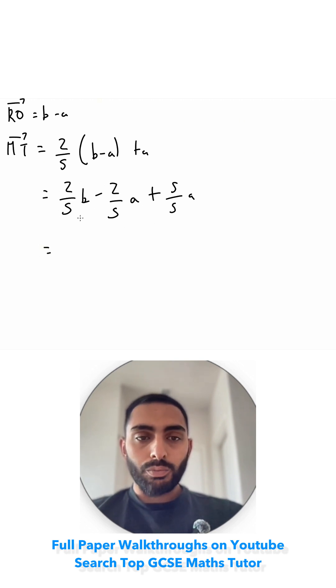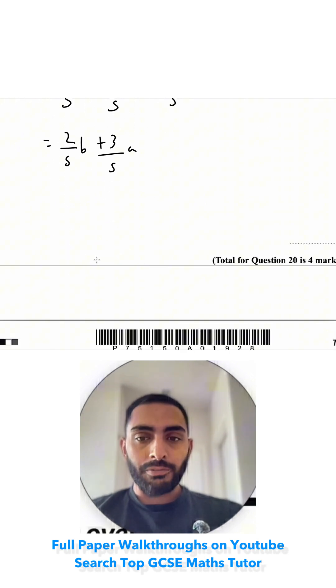I've got nothing that collects with this B, so I'll just rewrite that as 2 fifths B. Then I've got minus 2 plus 5, which is plus 3 over 5A. That's my final answer - I can't simplify that.